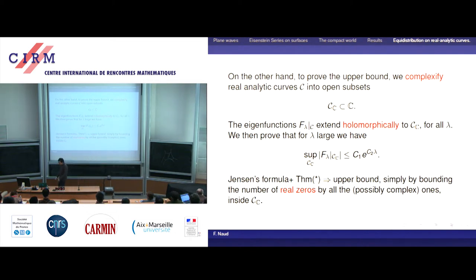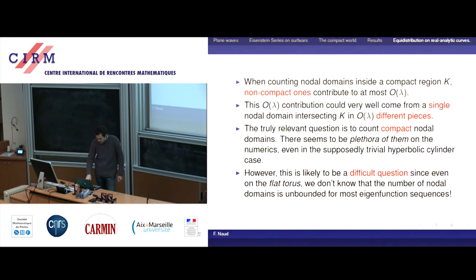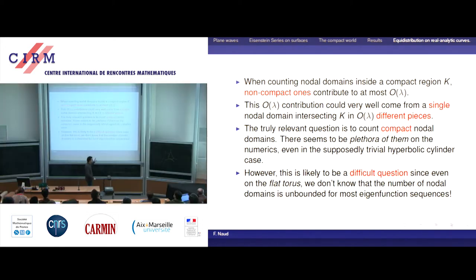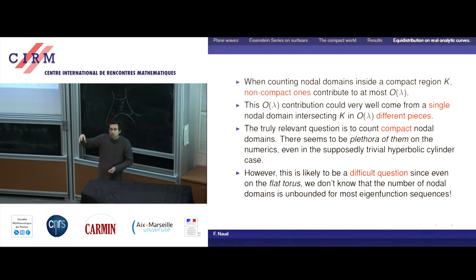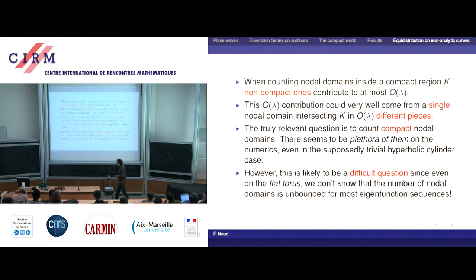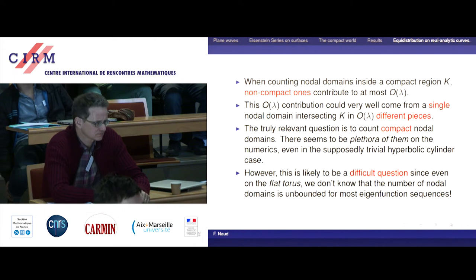So that's in a nutshell how it works. Now some comments about nodal domains. Using the result counting the number of intersections of nodal lines with a given curve, you can produce an upper bound for the number of nodal domains inside the compact region. The ones lying at the boundary contribute at most O(lambda). The ones that could saturate the Courant bound are the compact ones — the small islands.